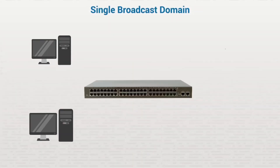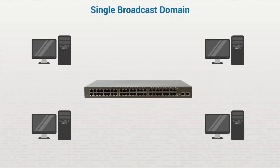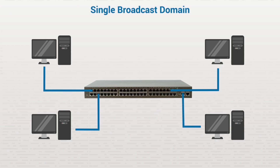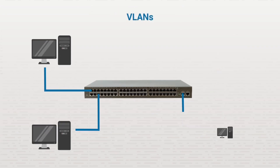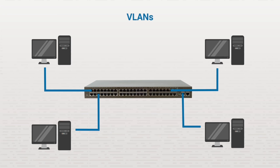By default, every port on a Layer 2 switch belongs to the same broadcast domain. This means if one host on this LAN sends a packet to the switch, the switch replicates or broadcasts the packet to all the other active ports on the switch. To create VLANs, you need to assign individual ports on a switch to the broadcast domain you want.